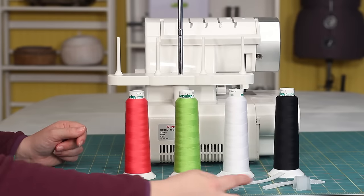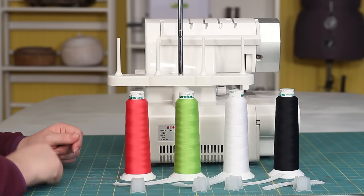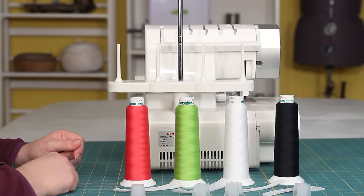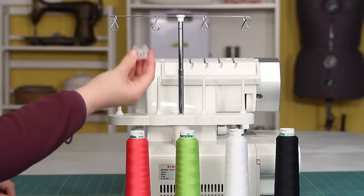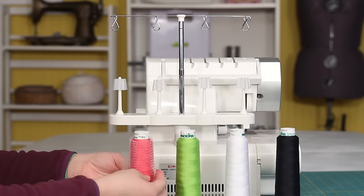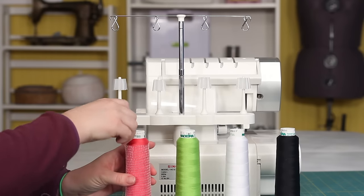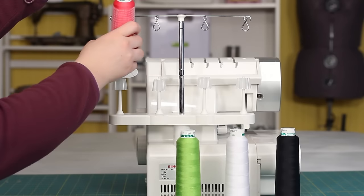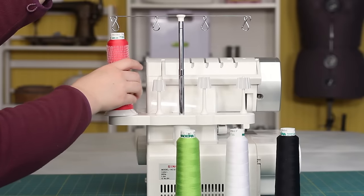You need your spool holders and your nets, and of course, your good quality thread. Today we're using Madeira. Go ahead and put on your spool holders. Then we can put on our thread nets. Pull out the end of your thread and place on your thread stand. And of course, you just repeat this with all of your spools.